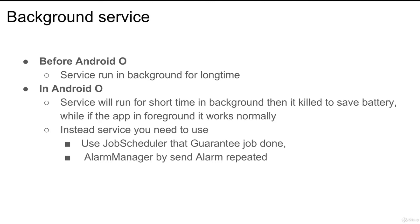But if the user clicks Home, your application goes to the background, and your service is now running in the background. In this case, Android O will give your application only a specific amount of time before it kills the service. So Android O will not allow a service to run for a long time — it gives it a specific time, then kills it, saving battery life. This means in your application you need to target both versions: if the device is running a version before Android O, use a service; if it is running Android O, you need another approach.